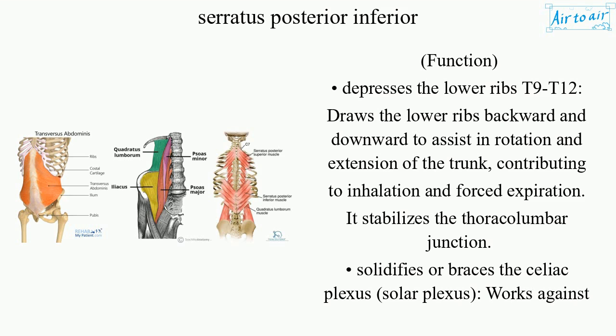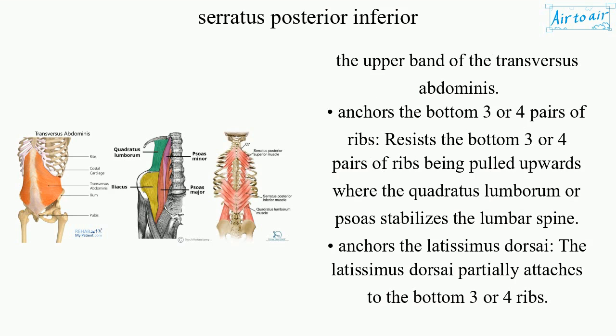It stabilizes the thoracolumbar junction, solidifies or braces the celiac plexus and solar plexus, works against the upper band of the transversus abdominis, anchors the bottom three or four pairs of ribs, and resists those ribs being pulled upwards where the quadratus lumborum or PSO stabilizes the lumbar spine.